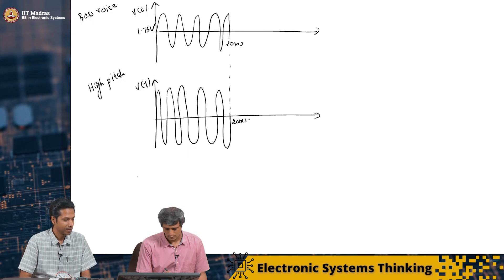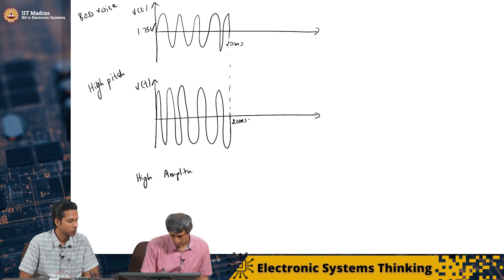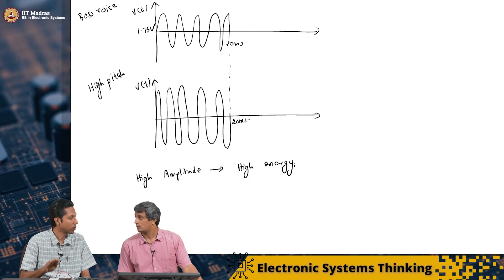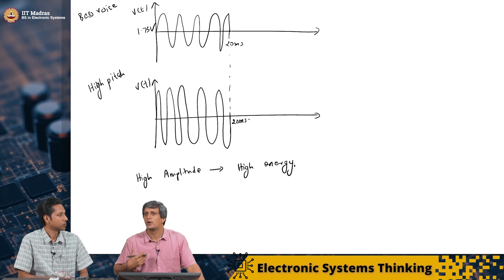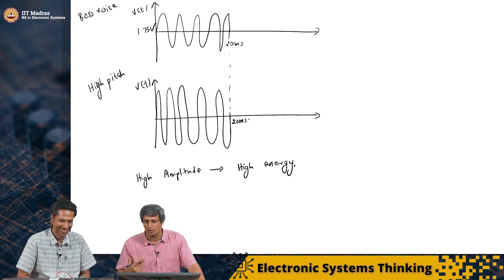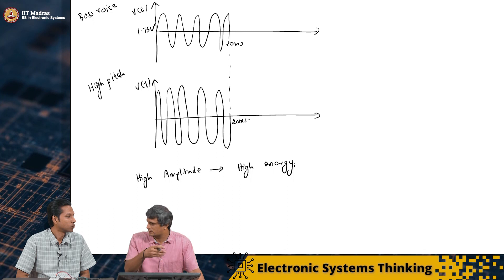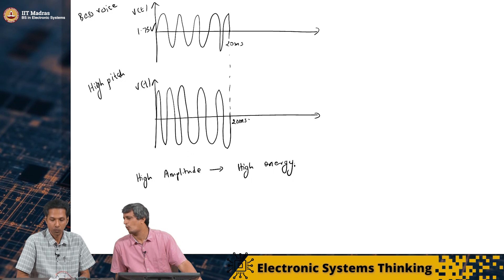So effectively now, what we have seen is, high amplitude implies high energy. So I am giving more input, more output is also. Yes, exactly. And you also know that when you have to speak loudly, you need more energy to actually spend more energy. Yeah, you have to spend more energy to generate that signal. Now similarly there is frequency dependent energy for the high pitch, low pitch and all that, but we will come to that at a later point in time.